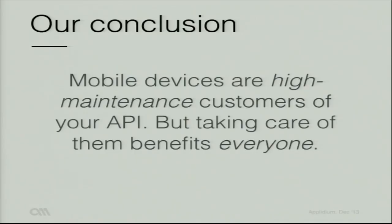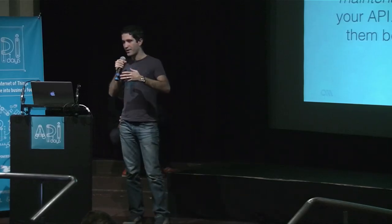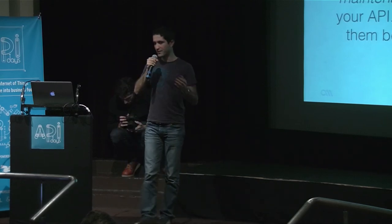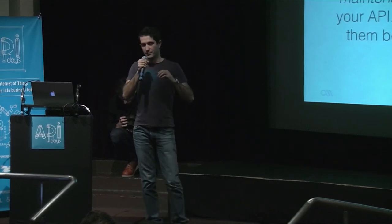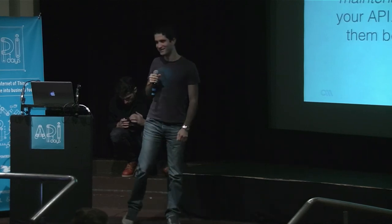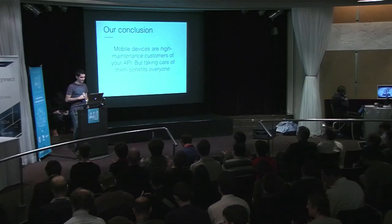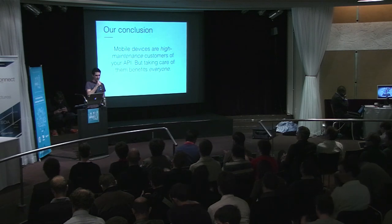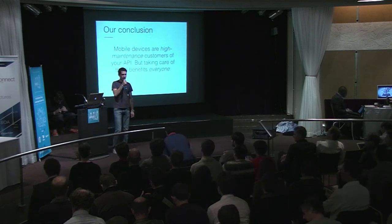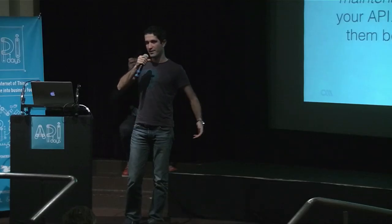So here is our conclusion: mobile devices are high maintenance — they are harder to work with. So if you build your API thinking about mobile, then it will benefit everyone, because whoever can do the most can do less. That's it. Does anyone have any questions about mobile APIs?